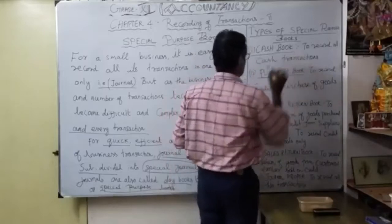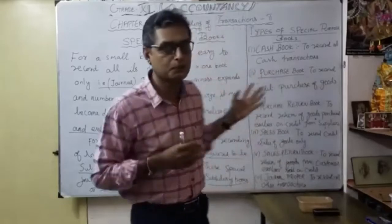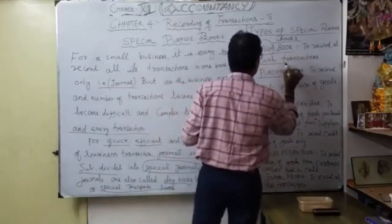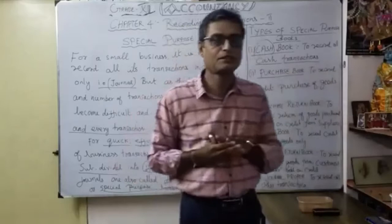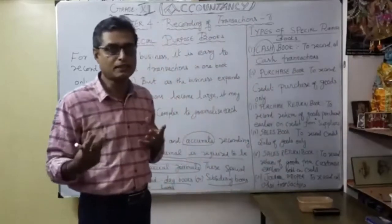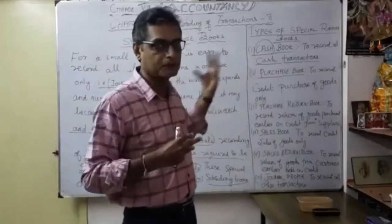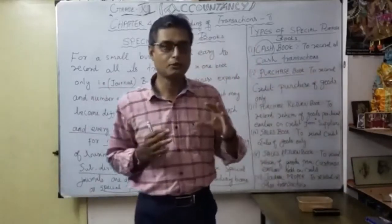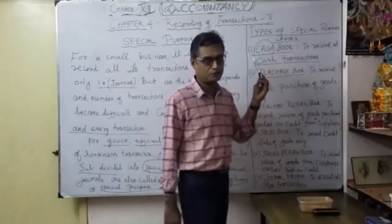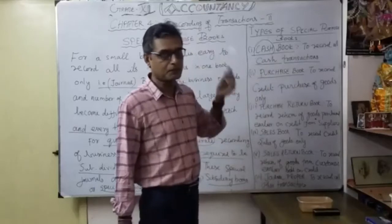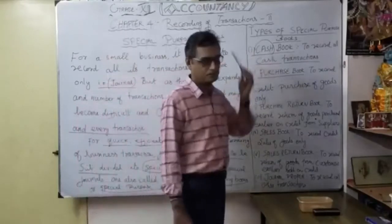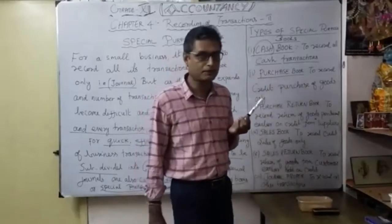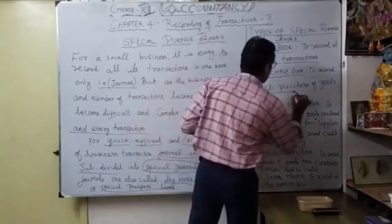What are the types of special purpose books? The first one is the cash book. The name itself says 'cash' — so naturally it records only the cash transactions. Whenever you are buying and selling and you pay immediately or receive the cash immediately, you prepare the cash book. That is why it is called the cash book — number one special purpose book.